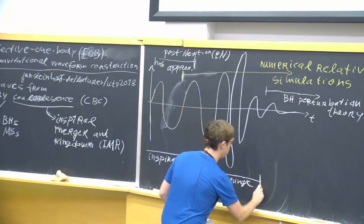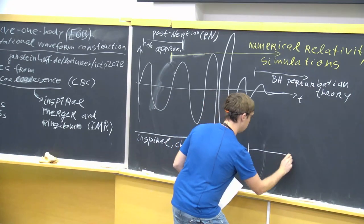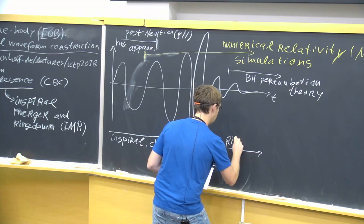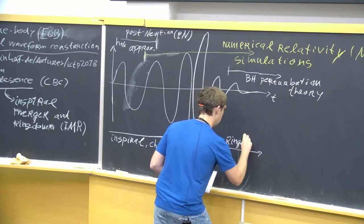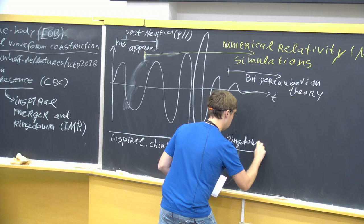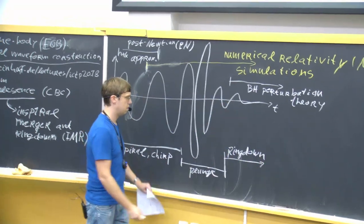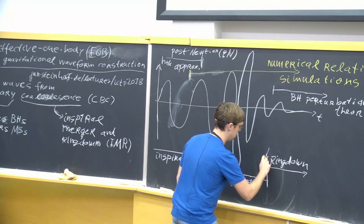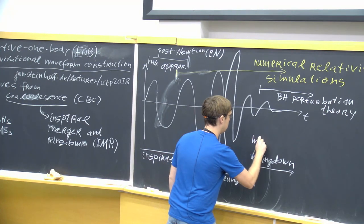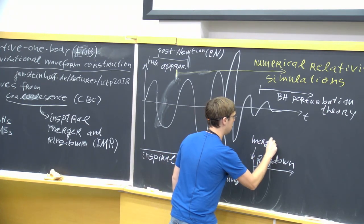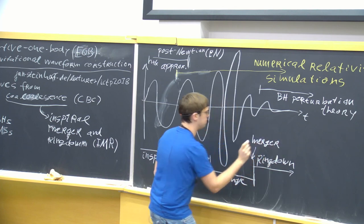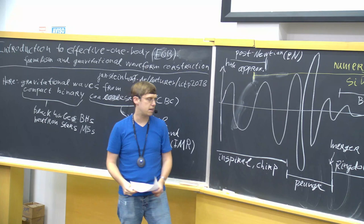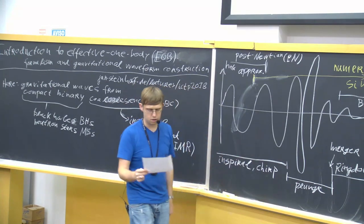And then, at some point, you have the ring down. That point over there is where the merger happens — where the two black holes touch and form a single black hole. So let's see the overall picture.